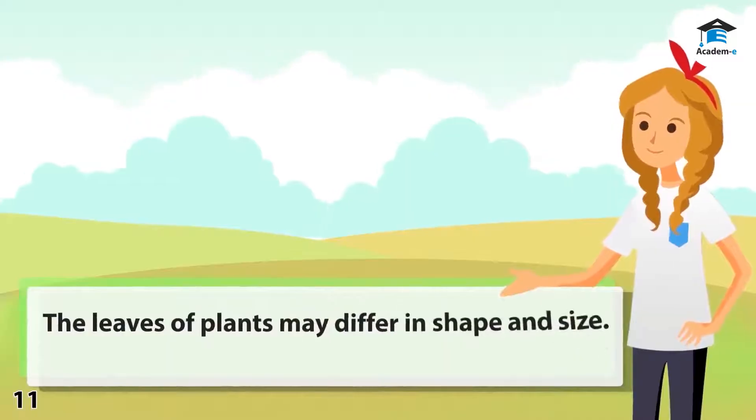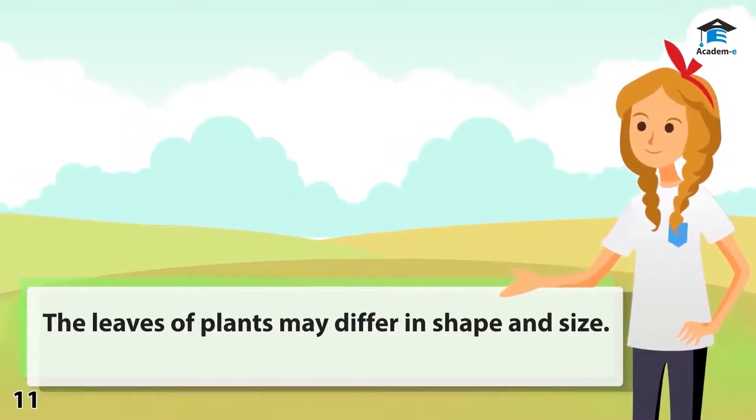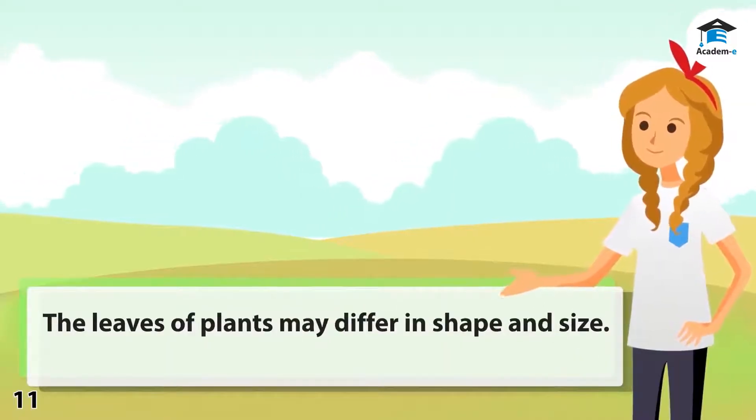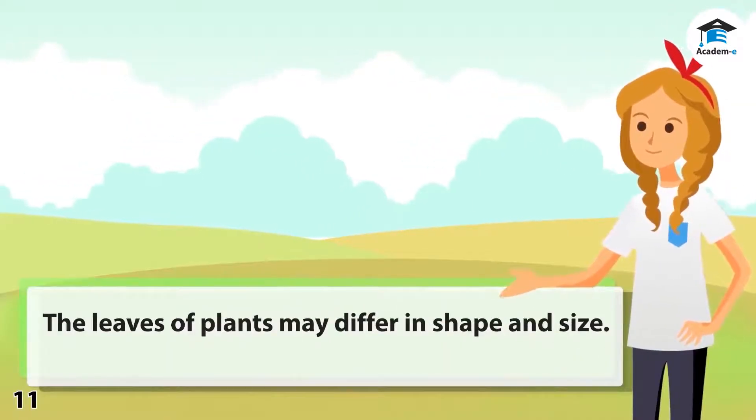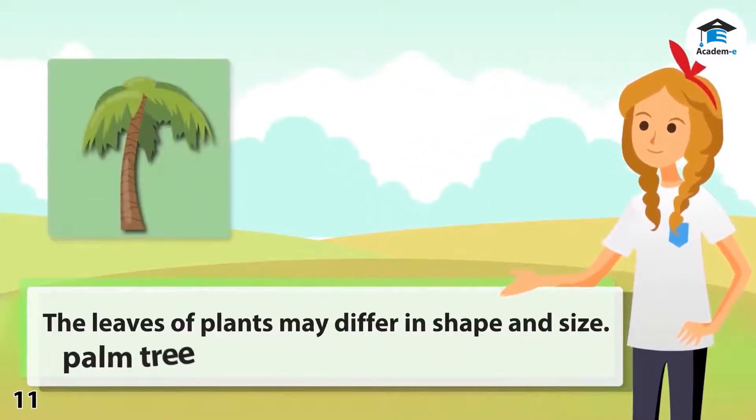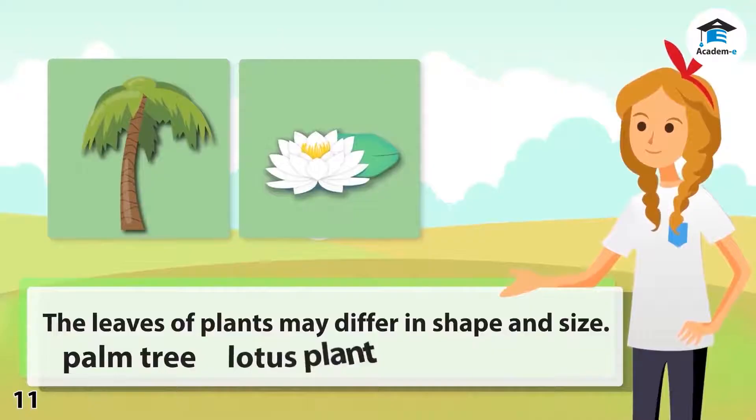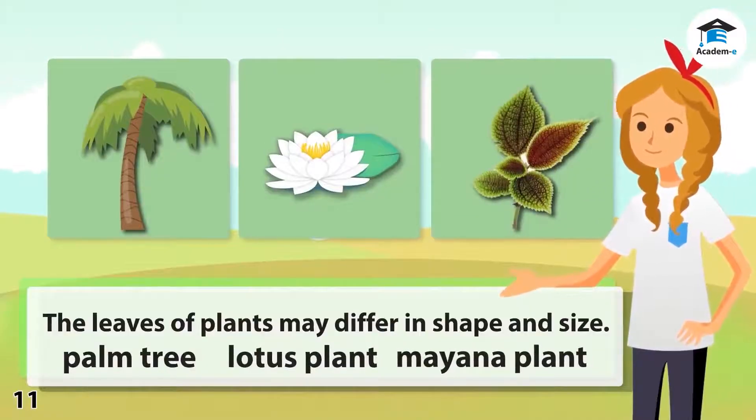The leaves of plants may differ in shape and size. Examples of these are palm tree, lotus plant, and mayana plant.